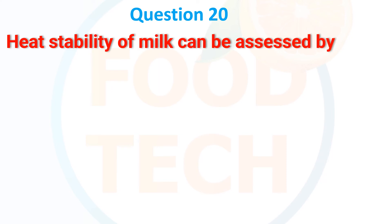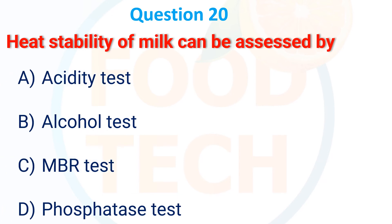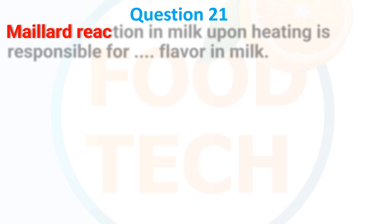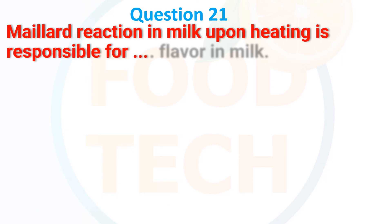Next MCQ: Heat stability of milk can be assessed by which test? Options: (A) Acidity test, (B) Alcohol test, (C) MBRT test, (D) Phosphate test. The correct answer is B — alcohol test.